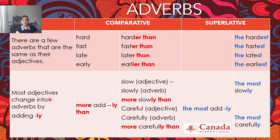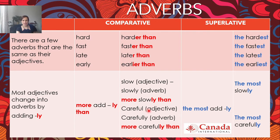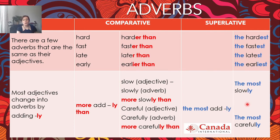Most adjectives change into adverbs by adding ly. So how are we going to make the comparative? We're going to write: more, adjective, ly, than. So the adjective slow becomes the adverb slowly, and the comparative is more slowly than — más lentamente que. Careful is the adjective, carefully is the adverb — remember with double l — and the comparative is more carefully than. The superlative is going to be the most adjective ly; for example, the most slowly, the most carefully — with double l in this case.